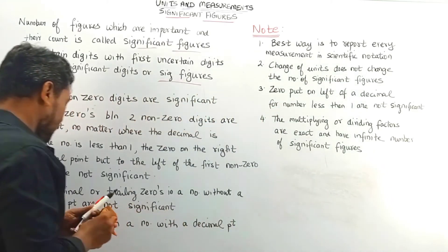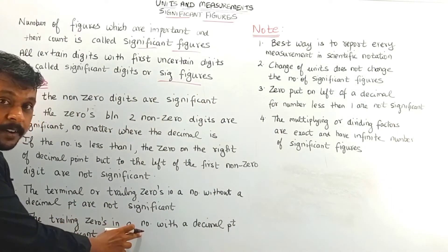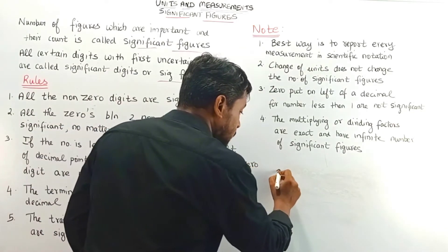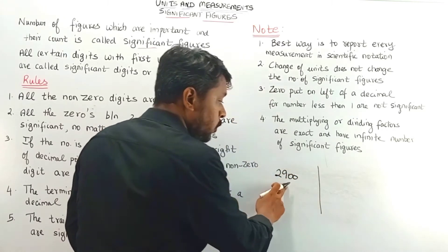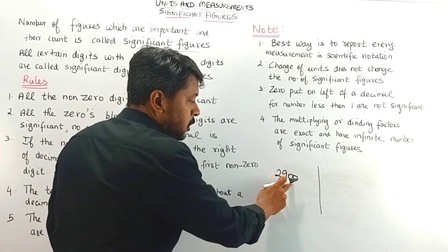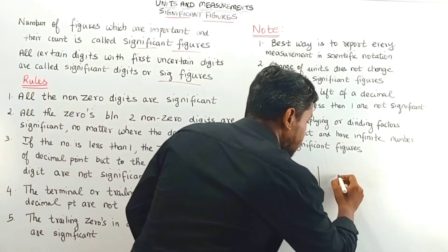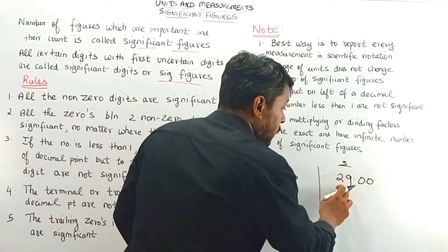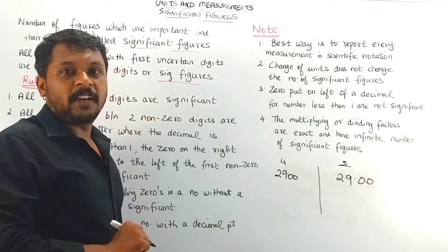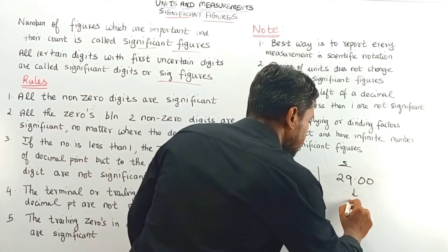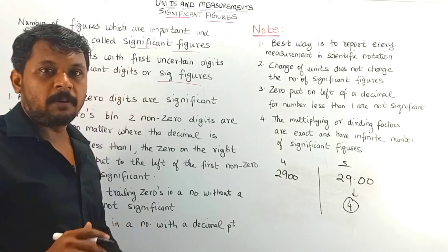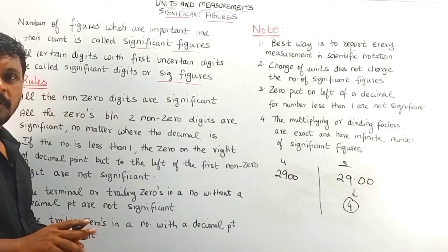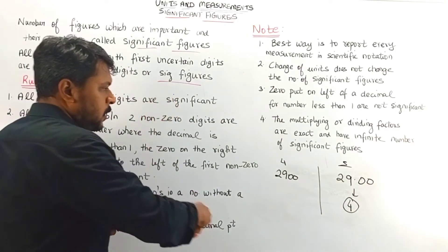The fifth rule: trailing zeros in a number with a decimal point are significant. In the fourth rule we had 2900 with no decimal — not significant. But in the fifth rule, 29.00 has a decimal point, so the trailing zeros are significant. The total number of significant figures here is 4.